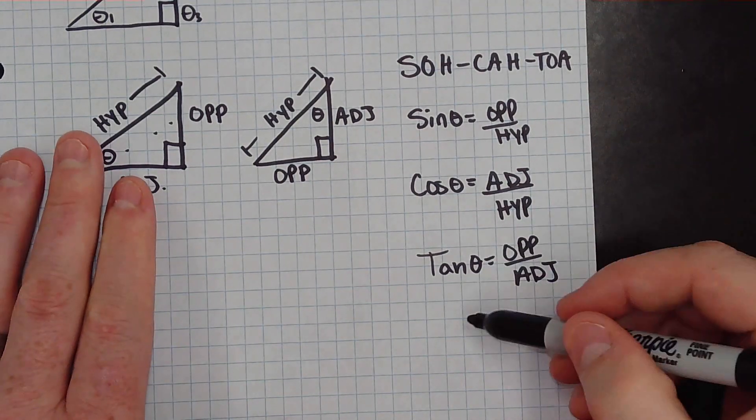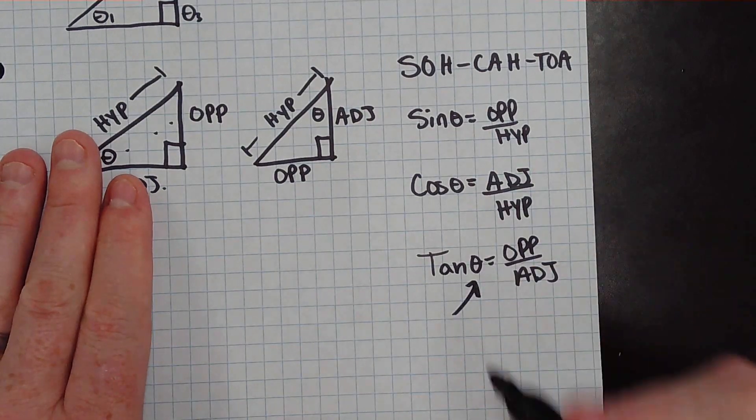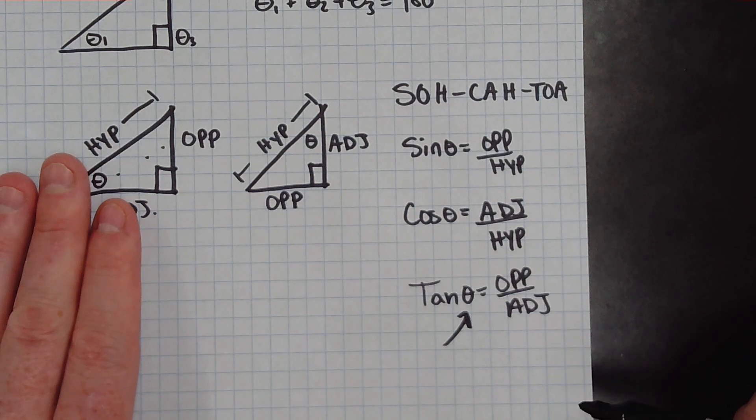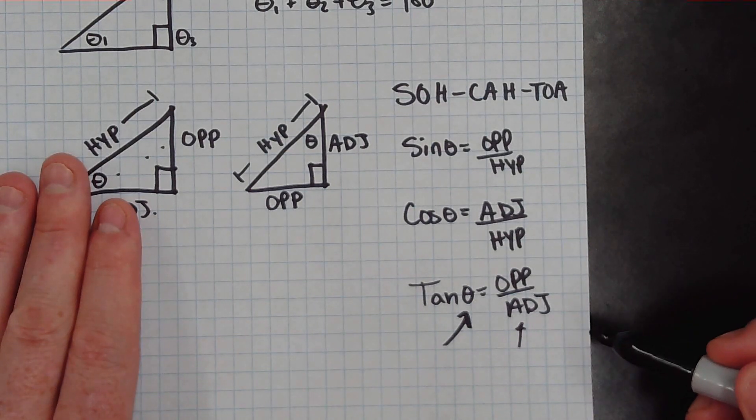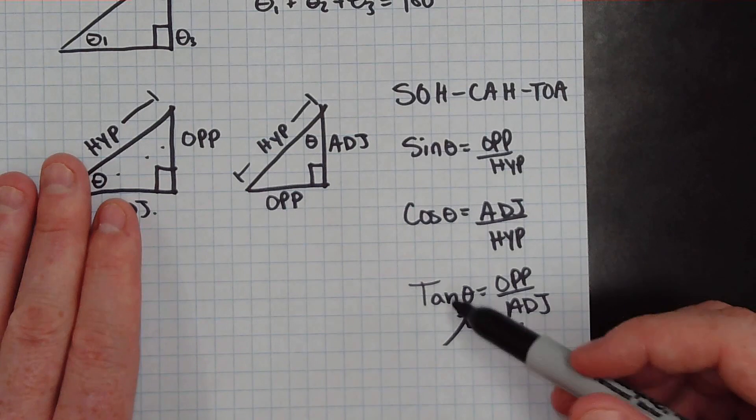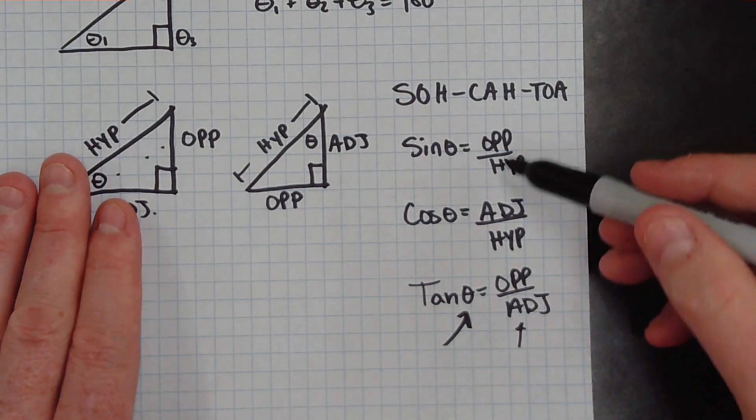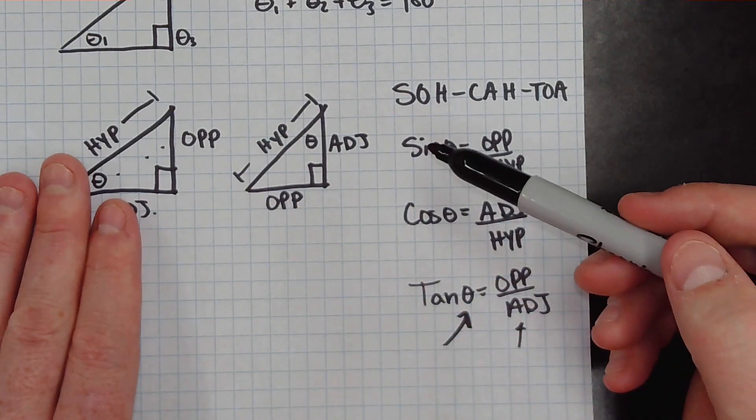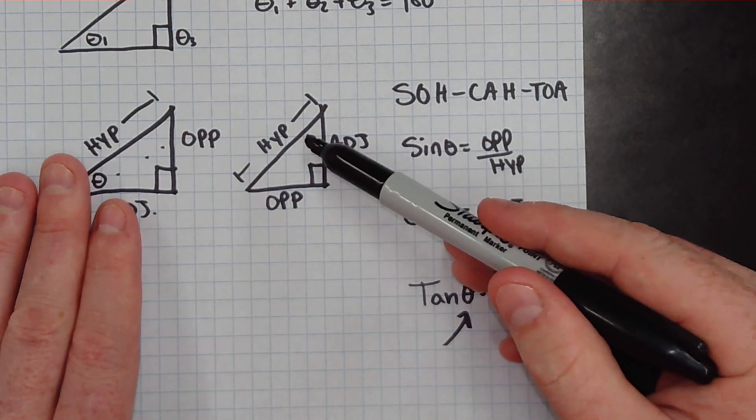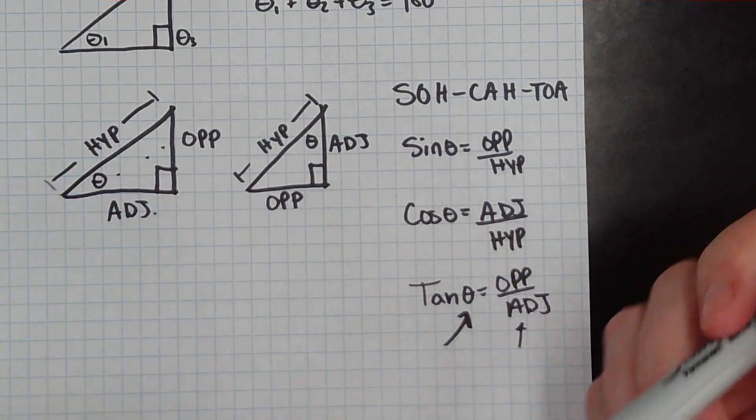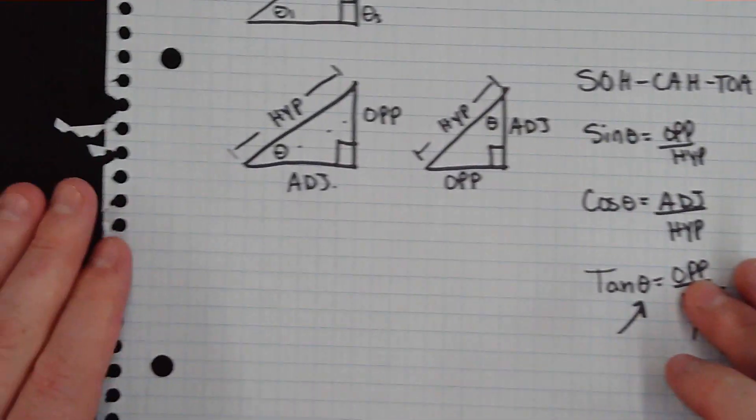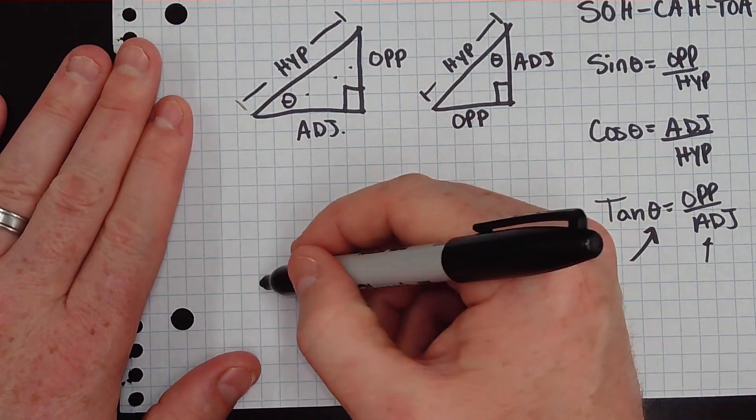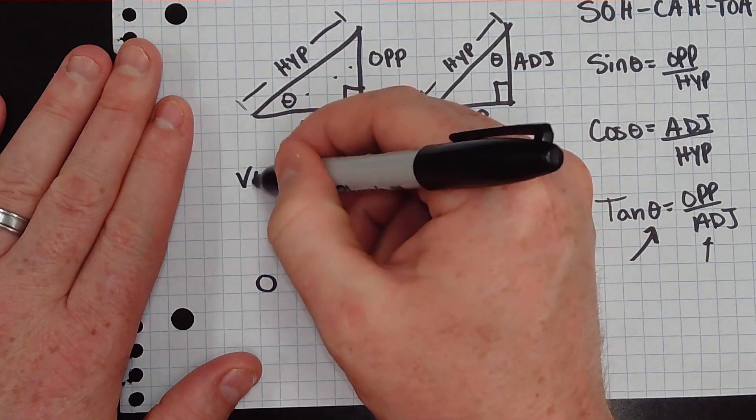Whenever you see opposite over hypotenuse, we know that's dealing with sine. Cosine is adjacent over hypotenuse. And tangent is the opposite over adjacent. So what this means is with a known angle, and if you know one side of a triangle, a right triangle, you can find the other side if you wish. Also, if you know two sides of the triangle, you can find the actual angle at any given point. So this is a really useful tool for us in physics. Now, in physics, for the most part, we actually use this with vectors.